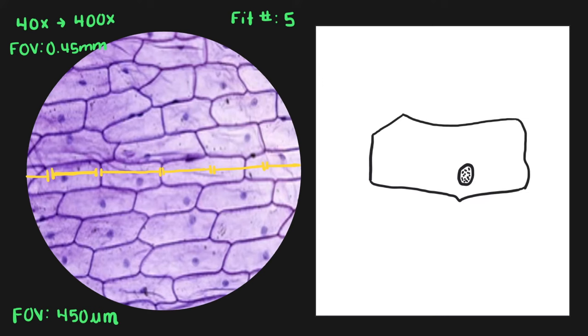We're going to start with cell size. So we want to know how big that cell actually is. We don't need our drawing for that, because all we really care about is our field of view over our fit number. So our field of view is 450 micrometers and our fit number is five. When we do that in our calculator, 450 divided by five, we get a cell size of 90 micrometers.